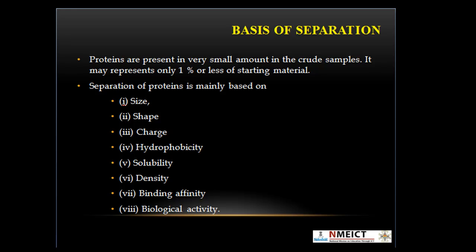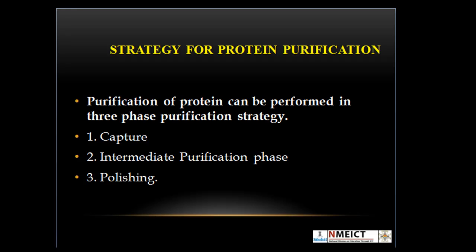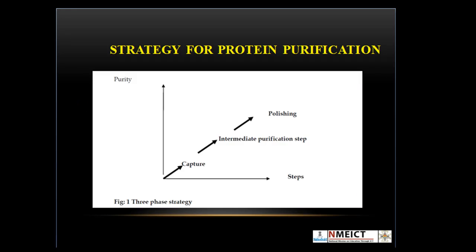Let's learn the strategy for protein purification. Purification of protein can be performed in a 3-phase purification strategy: capture, intermediate, and polishing. In the capture phase, proteins are isolated, stabilized, and concentrated. The intermediate purification phase removes large impurities like other biomolecules, other proteins, and viruses. The polishing phase removes trace impurities and achieves a high level of purity. It is very important to select a suitable combination of chromatographic techniques for each phase.